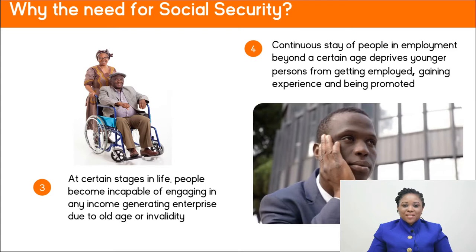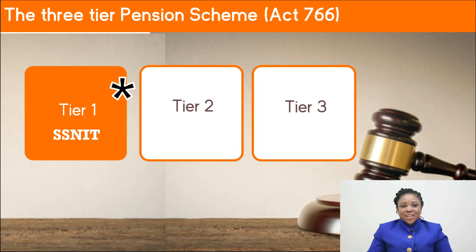Please remember that youthfulness is not permanent. Continuous stay of people in employment beyond a certain stage deprives younger people from getting employed, gaining experience, and being promoted. And so in Ghana, the compulsory retirement age for now is 60 years. Social security in Ghana has gone through several phases — from a provident fund to pensions — and now we have the three-tier pension scheme, which is governed by the National Pensions Law Act 766.